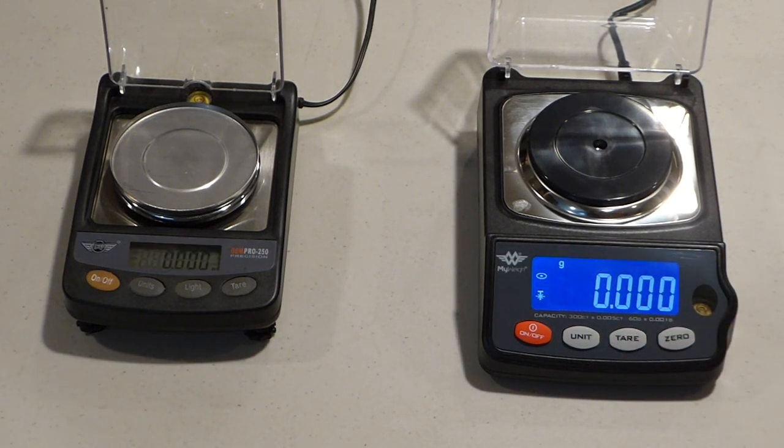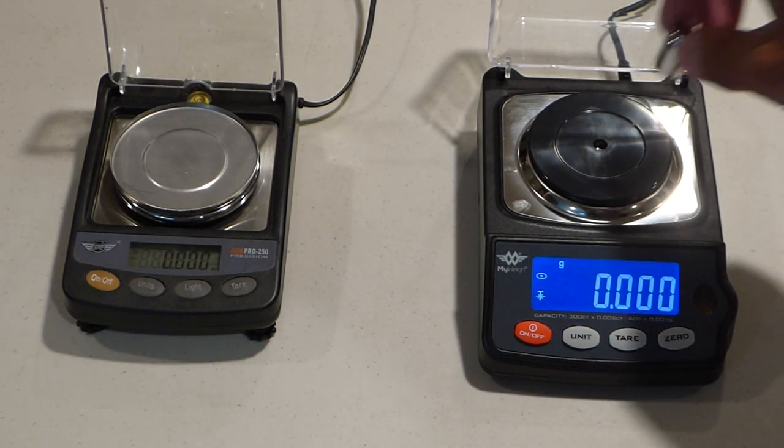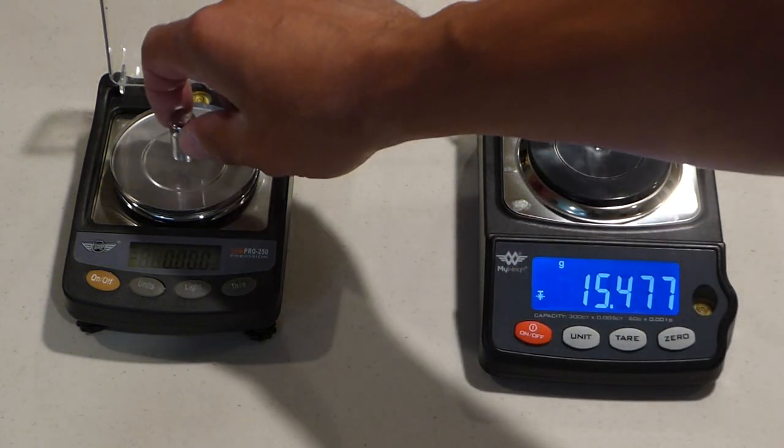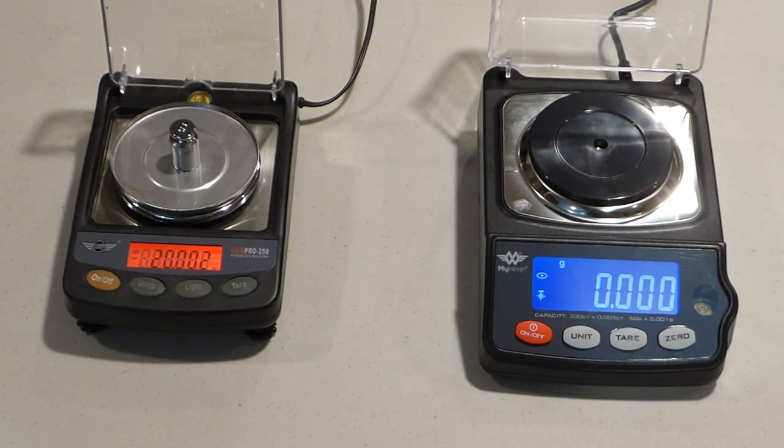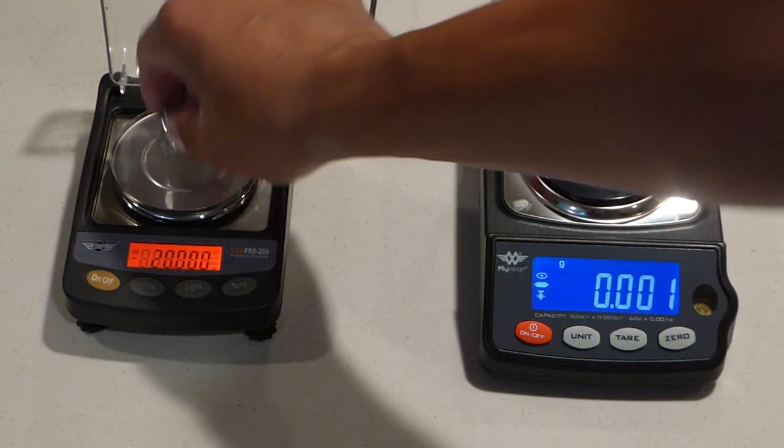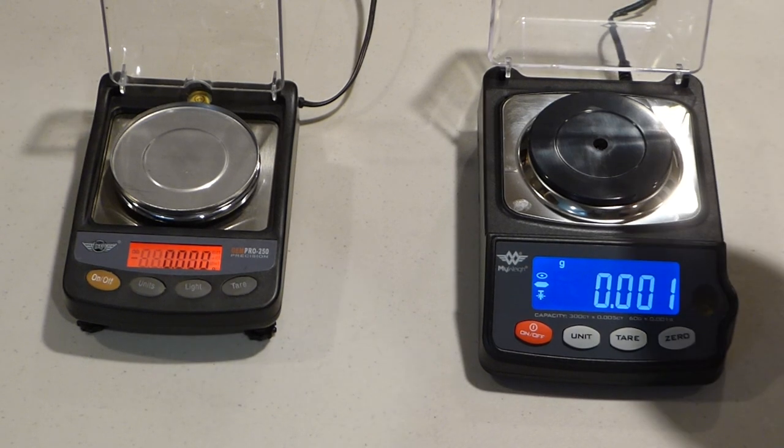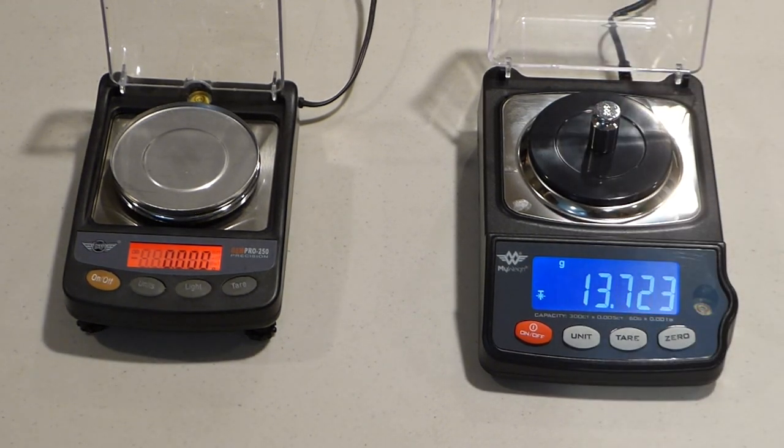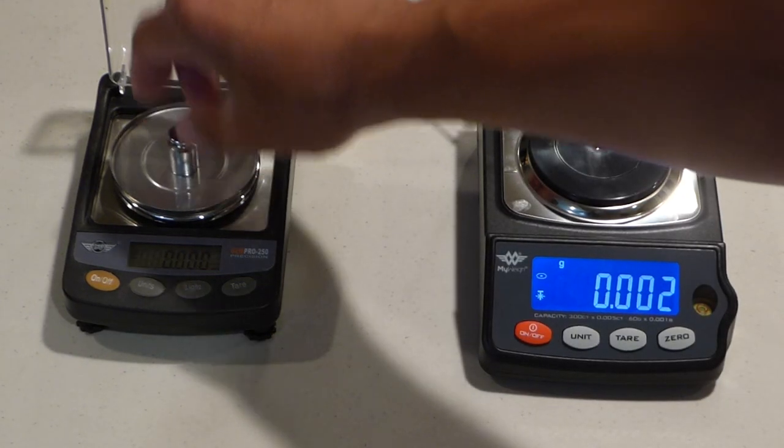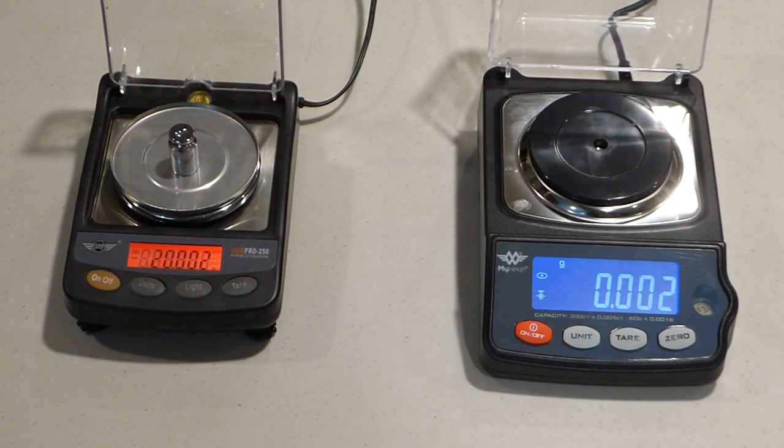We'll zero out this scale and you're going to watch for how quickly this locks. Weight on and we are locked. On the GEMPRO 250, weight on. We are locked. You can see that took a lot longer. Let's try it again. Let's go back to the GEMPRO 300, weight on, locked. GEMPRO 250, weight on and locked.